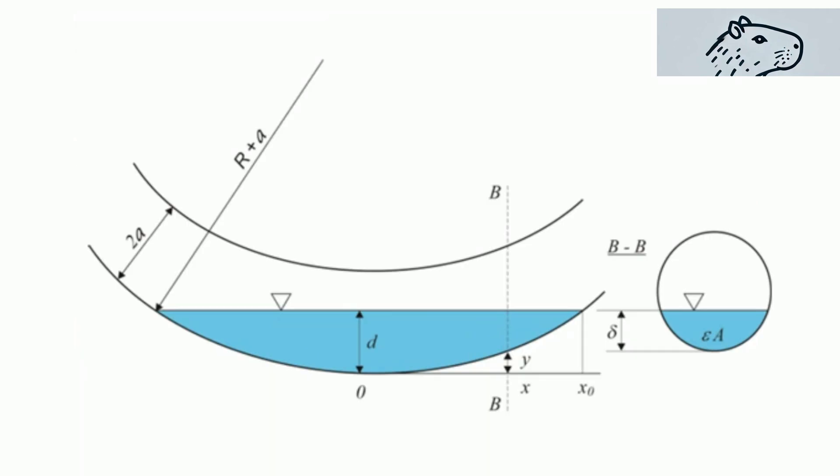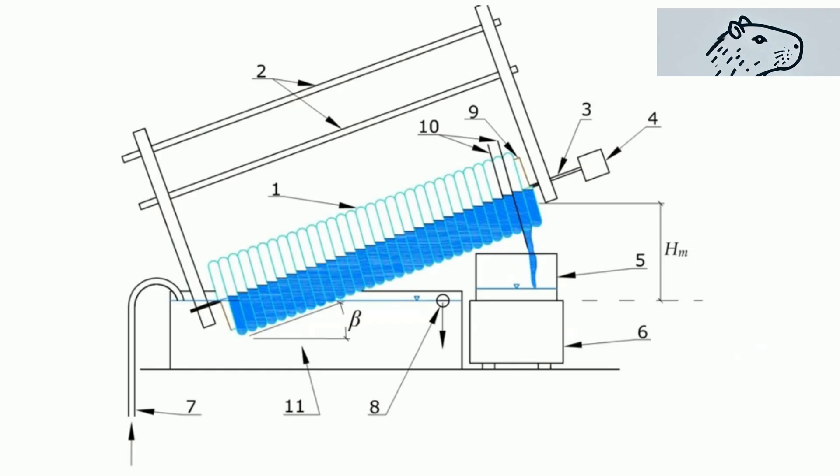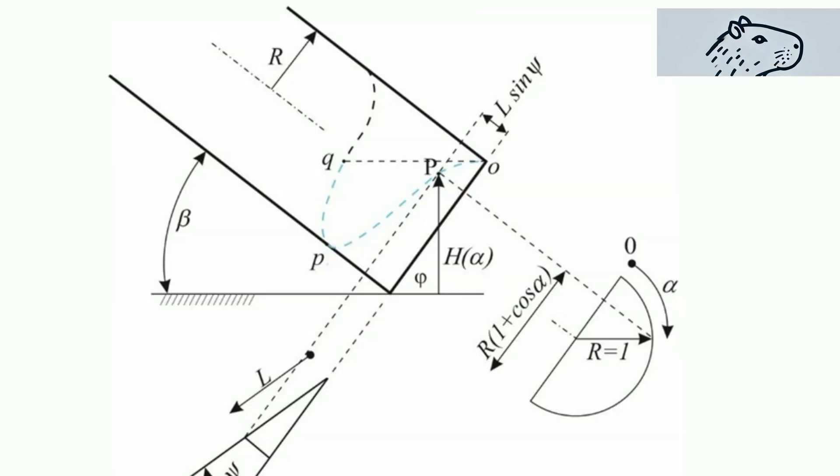As the spiral rotates, water is pushed upward due to the combined effects of centrifugal force and pressure gradients.